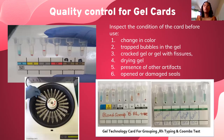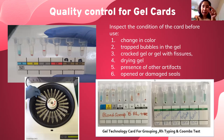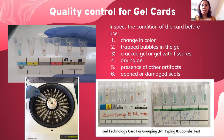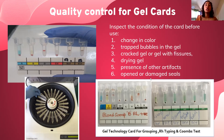For gel card quality control: before using gel cards, assess if there is a change in color — they should be neutral in color. Check for trapped bubbles in the gel, cracking or drying of the gel, artifacts or particles inside the gel, or opened or damaged seals. If any of these are present, do not use the gel card.